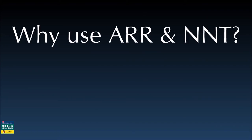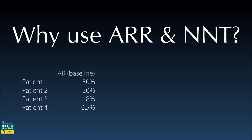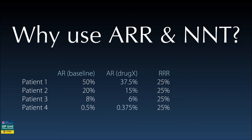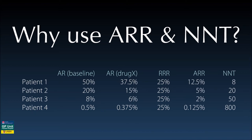Why use the absolute risk reduction statistic? Let's look at four different populations, where absolute risk refers to the risk of having a heart attack in the next 12 months. Patient 1 might be someone sitting in a coronary care unit; patient 4 is more typical of someone seen in primary care. Typically with a medication, the relative risk reduction is stable throughout risk categories — in this scenario the drug might be a statin, reducing risk by 25%. However, look at the impact: we only need to treat 8 patients like patient 1 to prevent one of them from dying by 12 months. That's major.